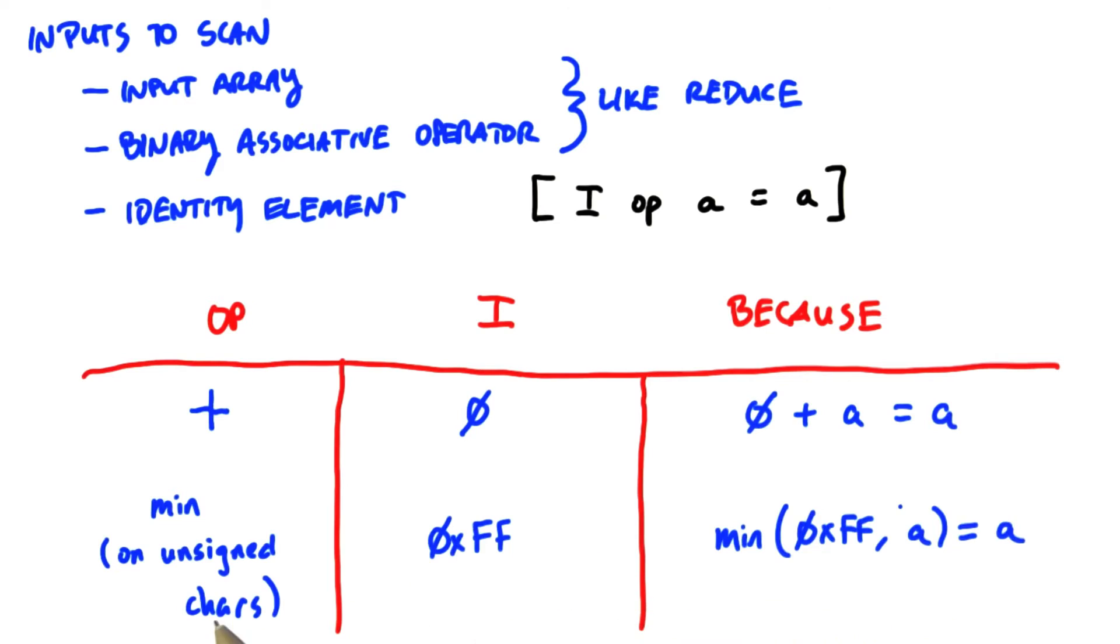For the binary associative operator minimum, the identity element is the maximum representative value. Consider an unsigned char data type, for instance. The identity element there is 0xff, because min of unsigned chars between 0xff and any value a will always give you back a.